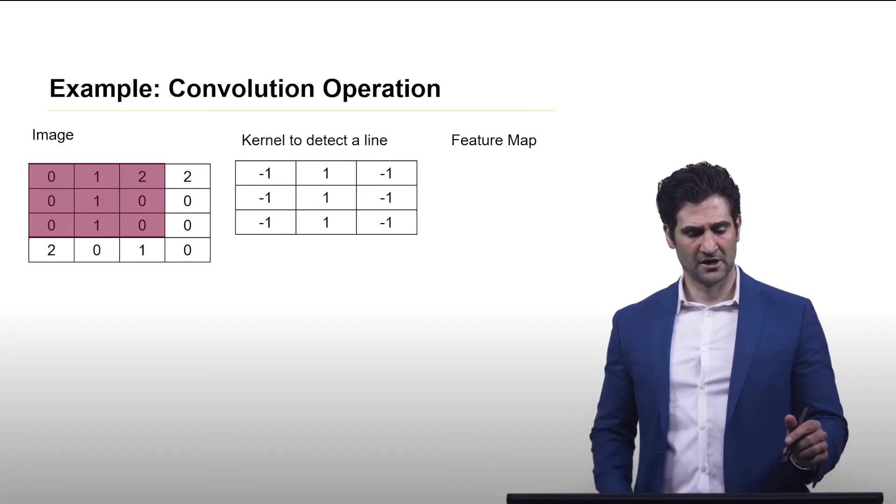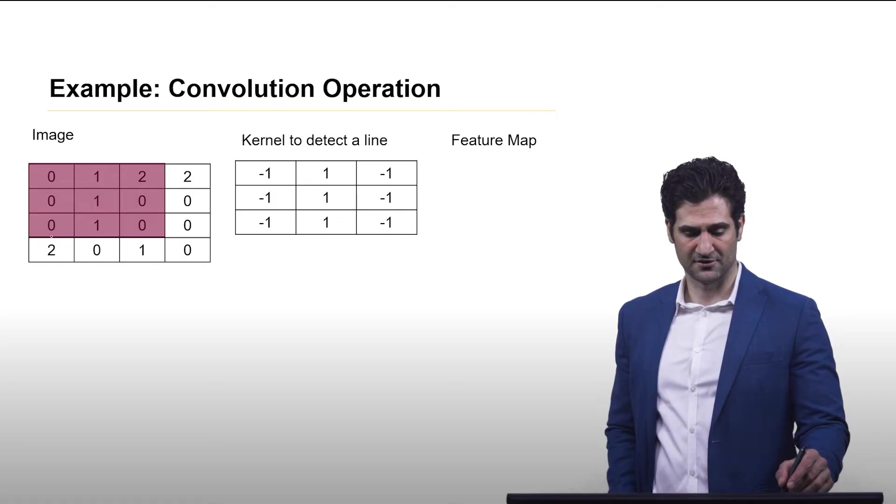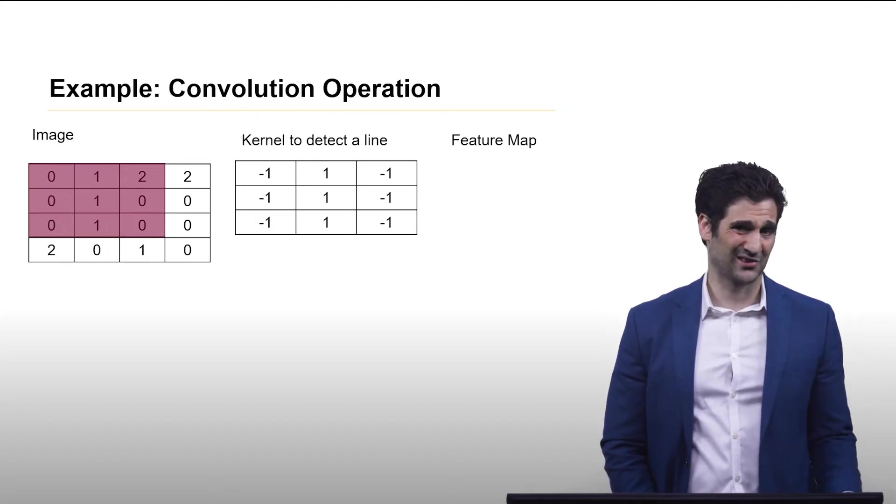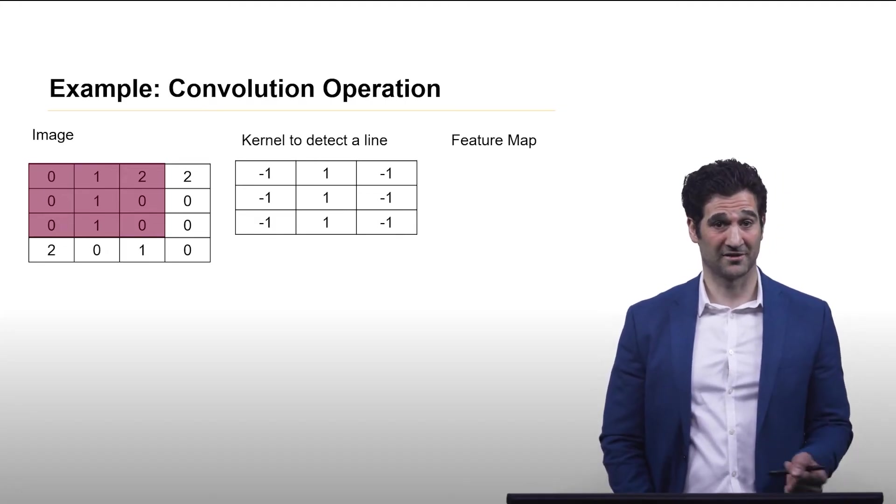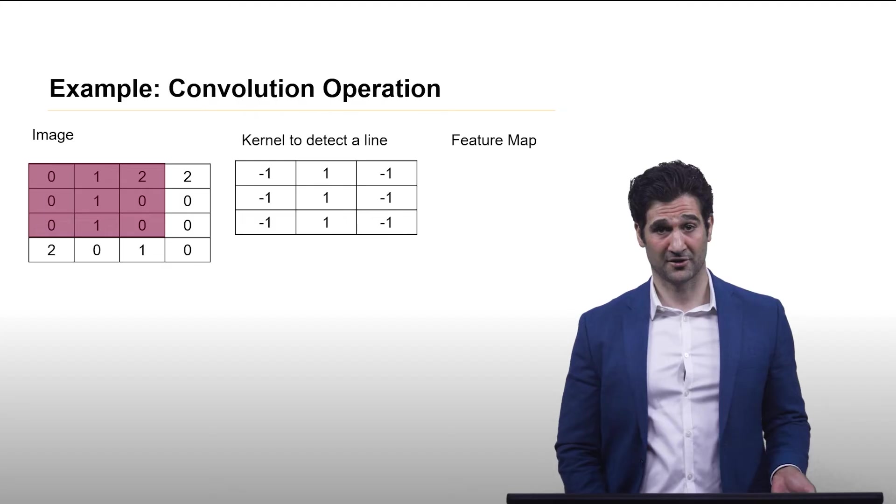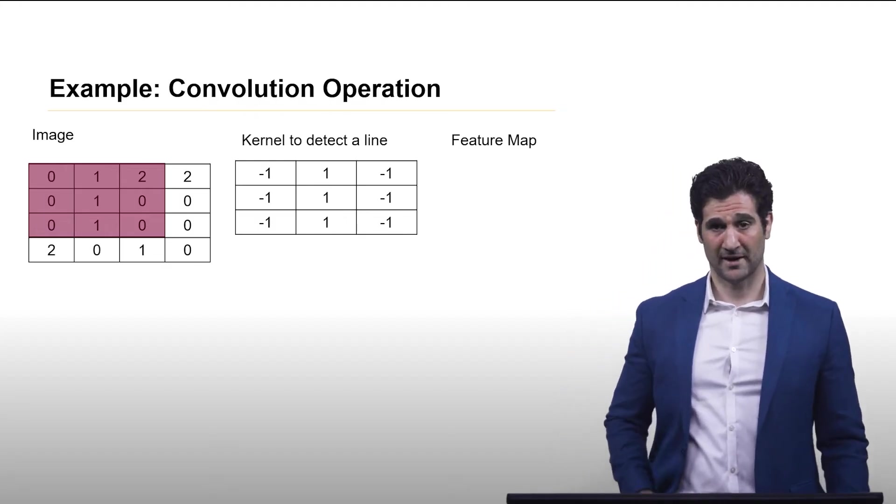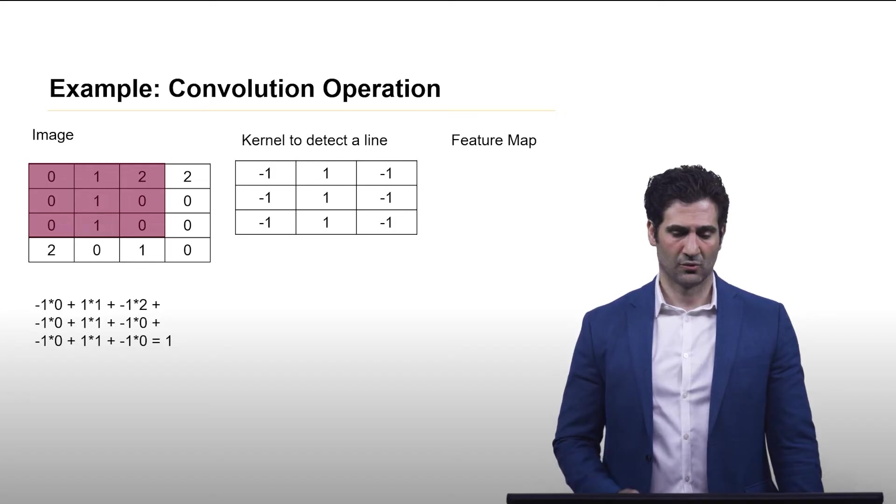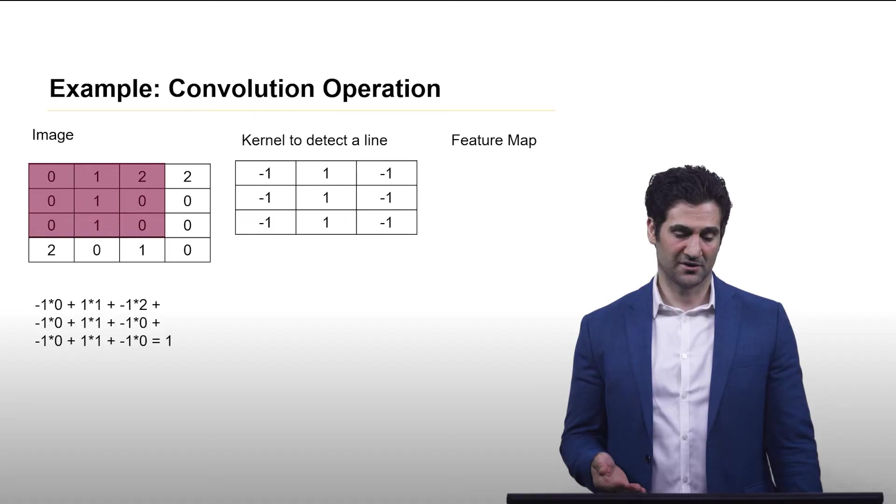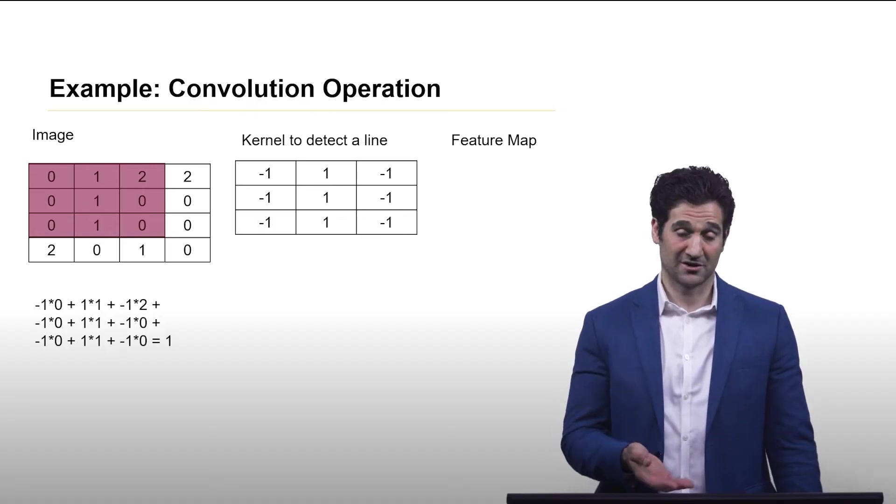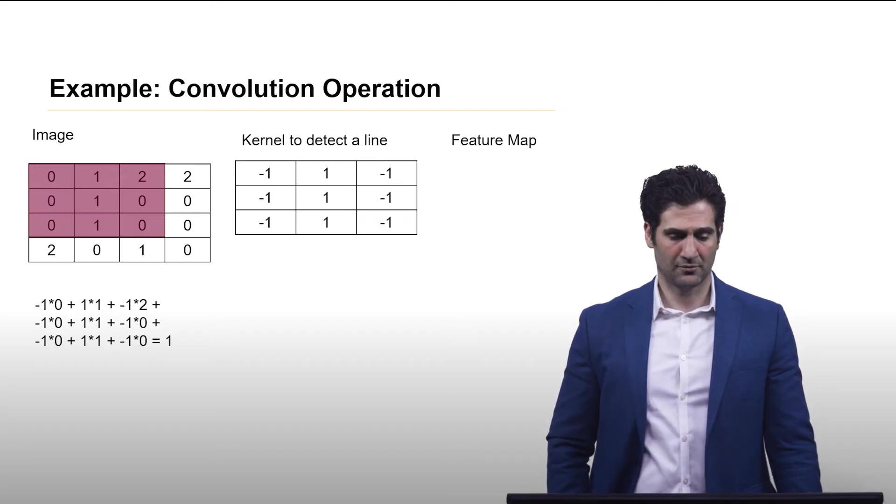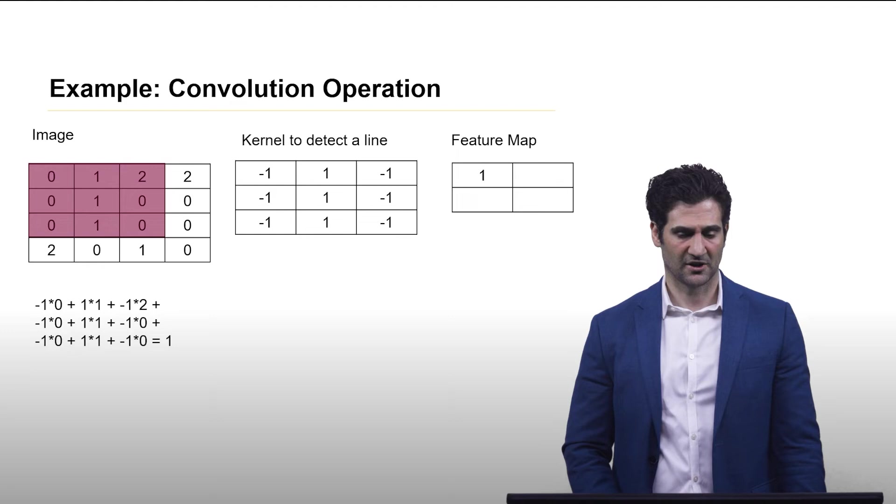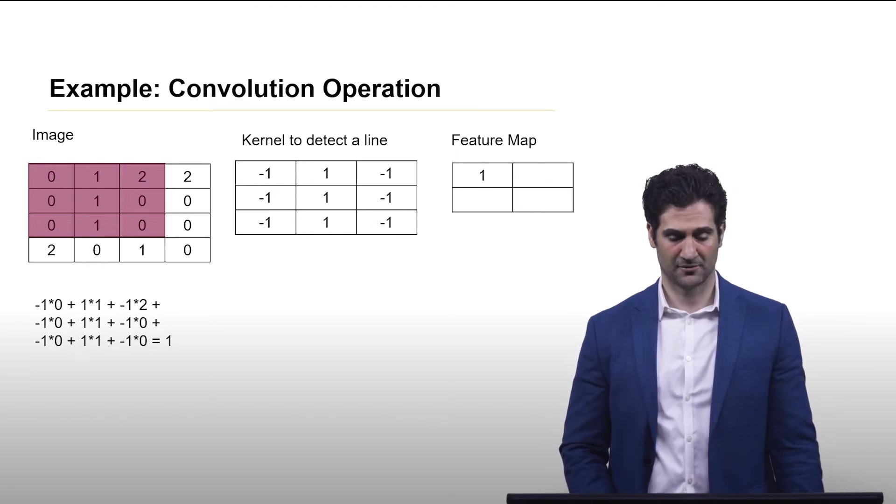We can take this kernel and put it over the first quadrant of the image. Notice by the way in which it fits, there's only four different positions we could put the kernel over. That's why in the feature map it's just a 2x2 grid. To figure out the value of the feature map, you're essentially just taking the dot product of the two. That gives us a 1, the first value in the feature map.